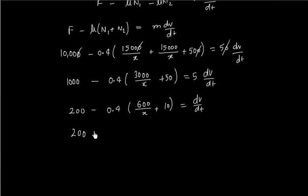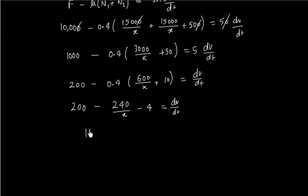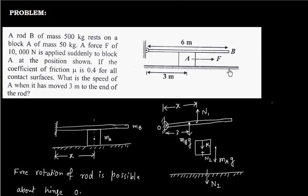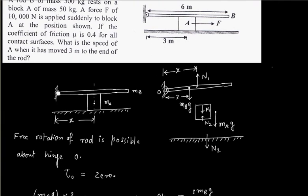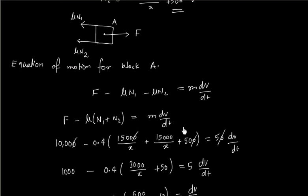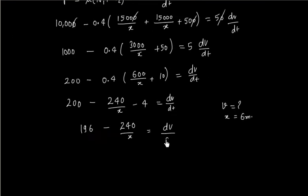After simplification, so we will have 196 minus 240 by x is equal to dv by dt. We need velocity when x is equal to 6 meters. That is it reaches to the end point. So what is my task? My task is to calculate velocity when it reaches here, that is x is equal to 6 meters, because we are measuring x from here. So final x is 6 meters.